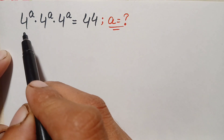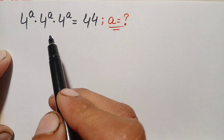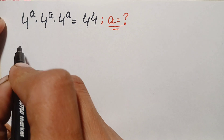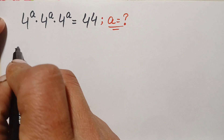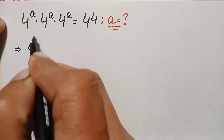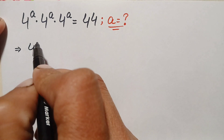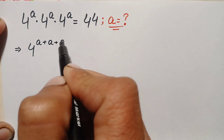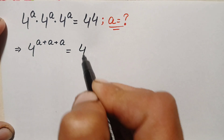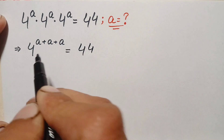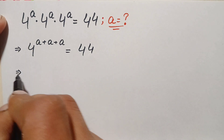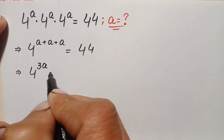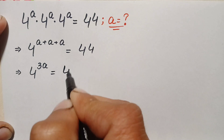Looking at the left hand side, the base is the same. Since the base is the same, we will add their powers. We write the base one time and add the exponents: 4 raised to power a plus a plus a, which becomes 4 raised to power 3a, is equal to 44.